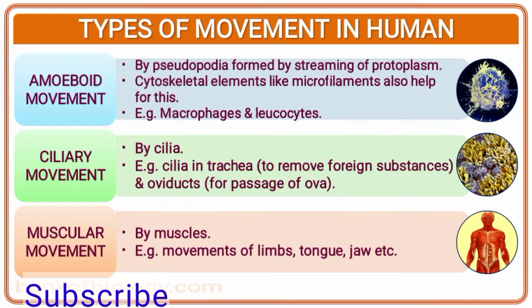Amoeboid movement is by pseudopodia formed by streaming of protoplasm — means to say pseudopodia are false projections. Cytoskeletal elements like microfilaments also help for this, for example macrophages and leucocytes.